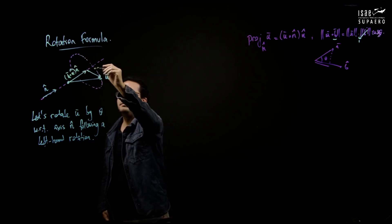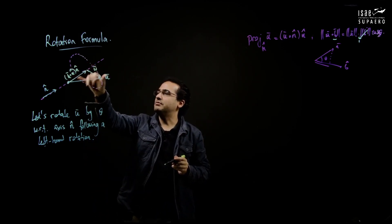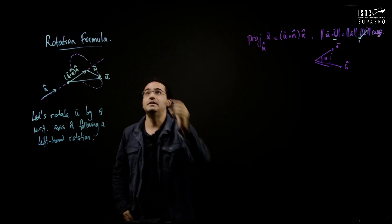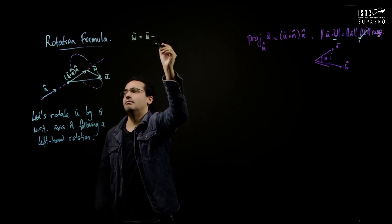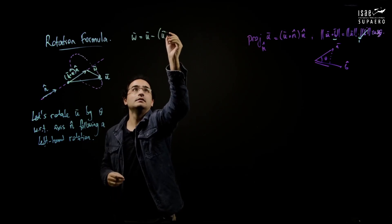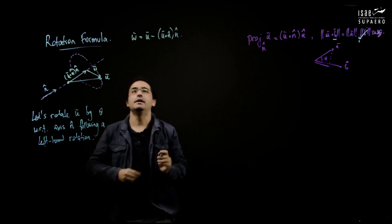And then you have something else, which is w. w is the vector that you should add to all of this to obtain u. Therefore, you can read w as u minus that. So this is w.